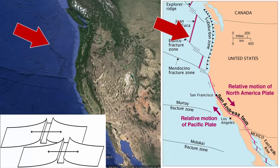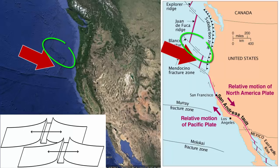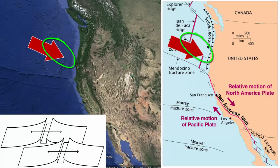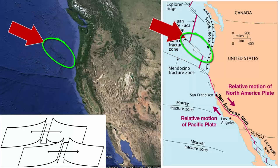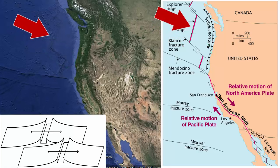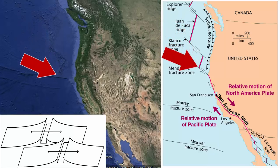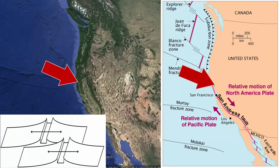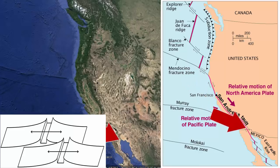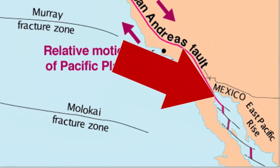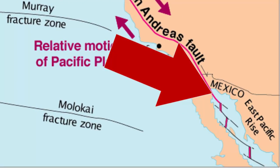Like all such centers, it is offset at regular intervals by transform faults. Moving along the ridge north, we hit a transform boundary that connects to the continuation of the spreading centers a bit west. Going back and following the ridge south, we hit another transform that offsets the ridge eastward — all the way south to the Sea of Cortez, where it connects with the seafloor spreading centers that are separating the Baja Peninsula from the rest of Mexico.